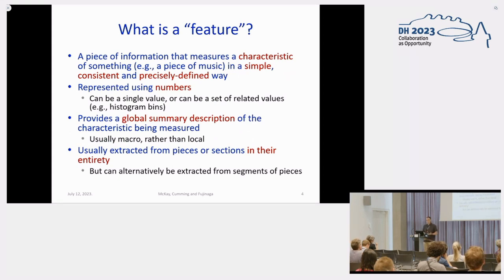The other major concept I wanted to introduce right from the beginning is the notion of a feature, because that term can mean different things in different disciplines. When I'm talking about a feature in this talk, what I mean is a piece of information that measures a characteristic of something—in this case a piece of music—in a simple, consistent, and precisely defined way. A feature can be represented using a number, either a single value or a set of related values, a feature vector, like the frequency values of histogram bins. We're looking at how they summarize information for a piece of music globally, the overall characterization of the music in a macro sense and not looking at what's happening more in a local sense.